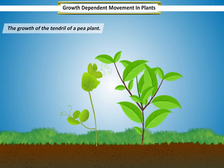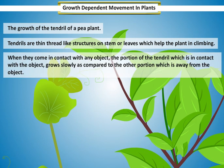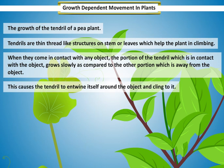For example, the growth of the tendril of a bean plant. Tendrils are thin thread-like structures on stem or leaves which help the plant in climbing. When they come in contact with any object, the portion of the tendril which is in contact with the object grows slowly as compared to the other portion which is away from the object. This causes the tendril to entwine itself around the object and cling to it.